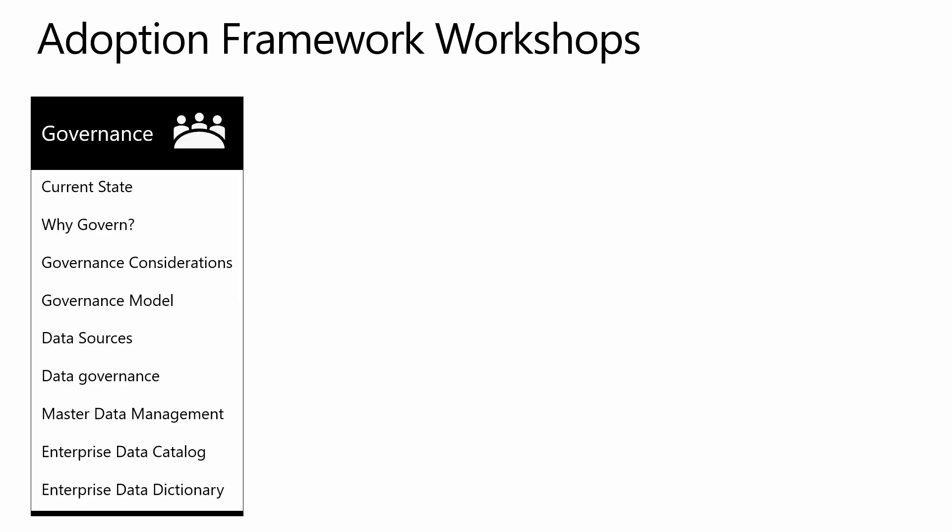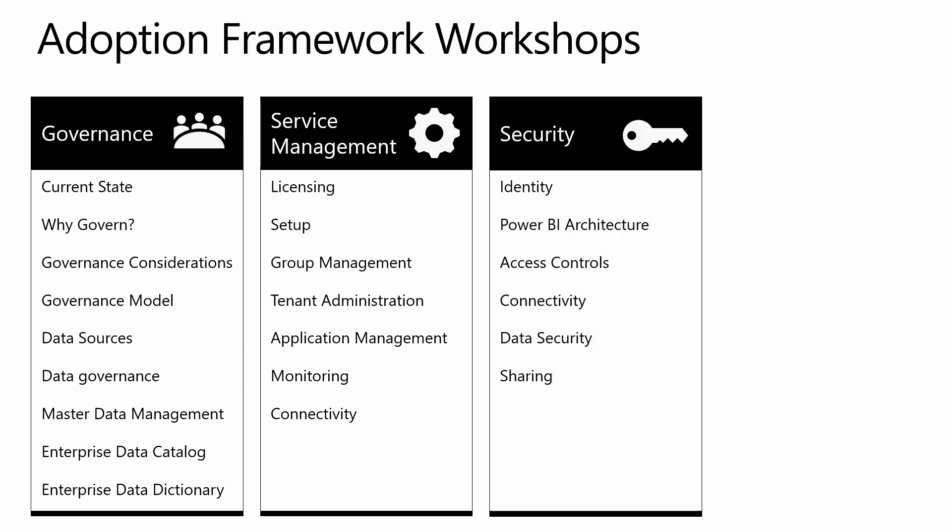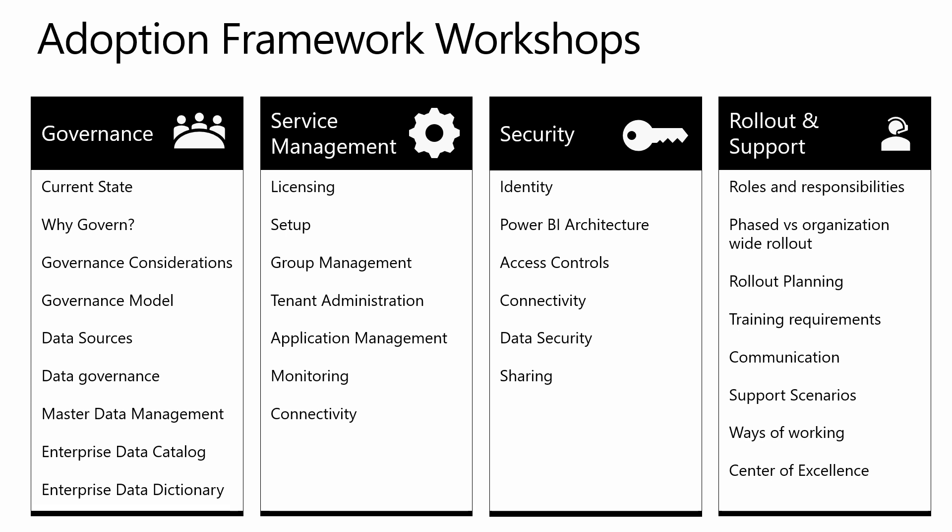In the following series of videos, Manu and I will cover the four major areas of the adoption framework. Starting with governance, where we'll look at why, what, and how to govern for a self-service BI culture. We will then look at what you need to decide on for service management — configuring Power BI to meet your organization's security and business requirements. Next we'll talk about security and how Power BI stores your data securely. And finally we'll discuss how you can roll out Power BI, be prepared for all support scenarios, and how a Center of Excellence is a key part of making all of these stages successful.